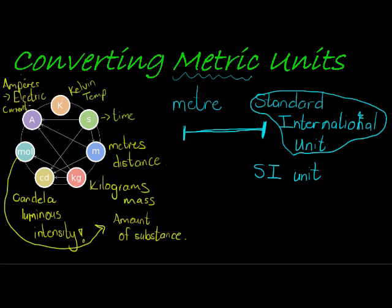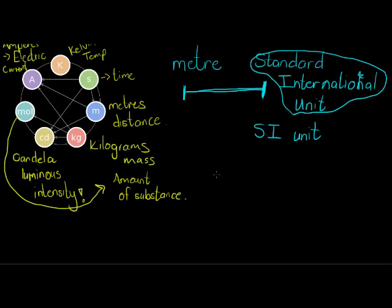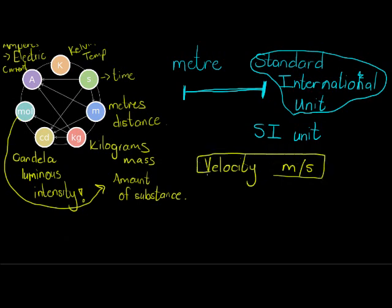Now these seven represent the seven most basic metric units. And none of them can be written as a measure of the other ones. For example, we know that we can measure velocity or speed in meters per second. So here we see that velocity is actually measured as some relationship between two of these, meters and second.